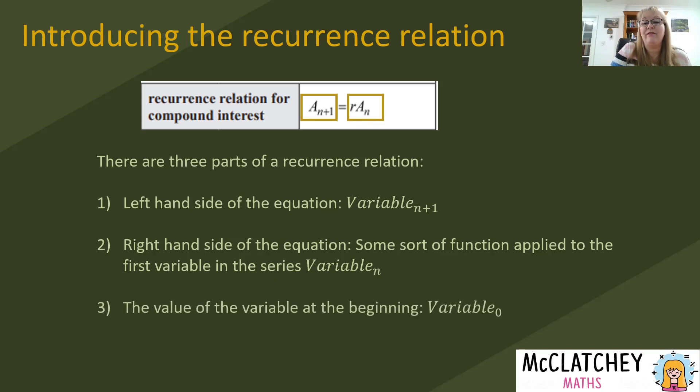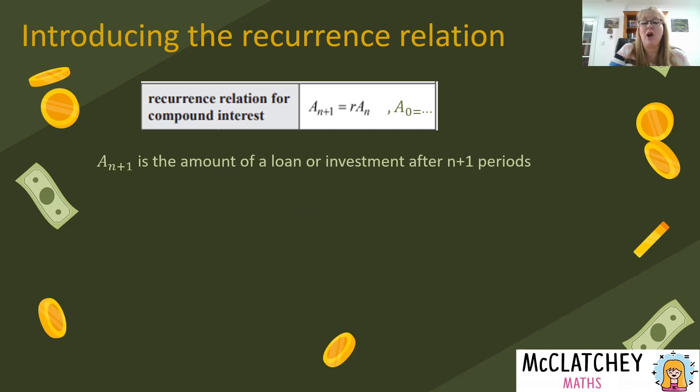Okay now the value of the variable at the beginning, variable at time 0, should also be written on your recurrence relation. Now that's not put on your formula sheet but you need to remember when you're writing a recurrence relation that's an important part, stating what the variable is at time 0 because that gives you the very beginning of your series. Okay that might be a whole lot of mumbo jumbo. Let's talk about this with respect to compound interest specifically.